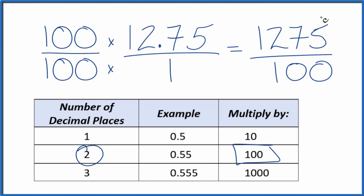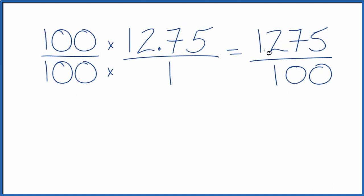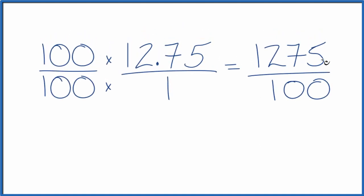We can simplify this though, get it down to lowest terms. Let's do that. So if we divide 1,275 by 25, that gives us 51. And if we divide 100 by 25, we get 4. So the decimal 12.75 equals the fraction 51 fourths.